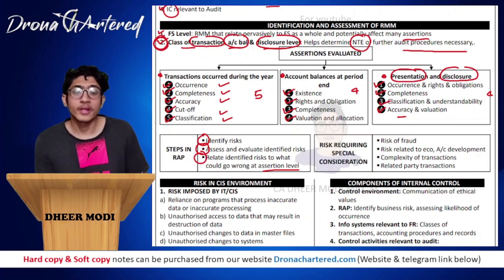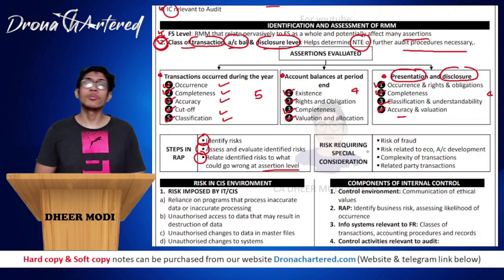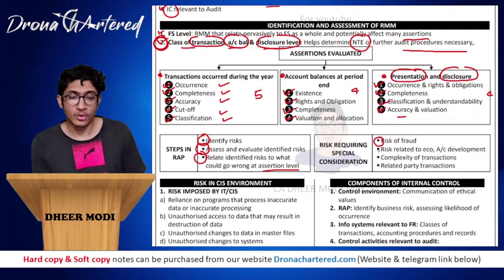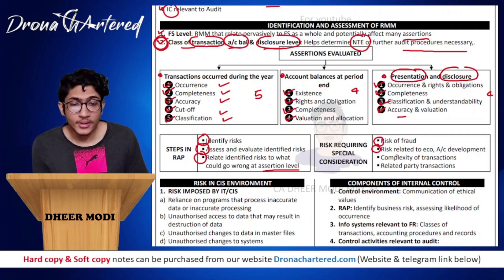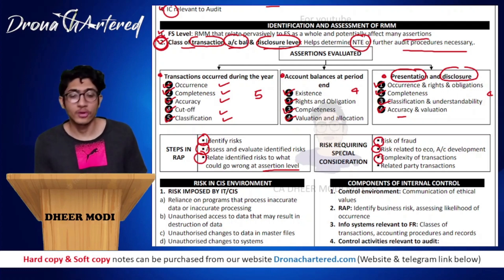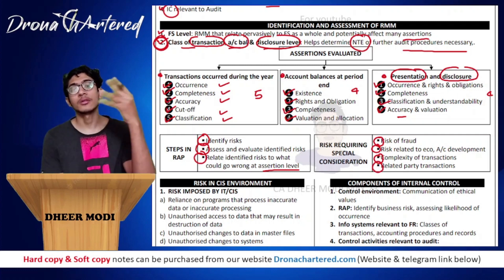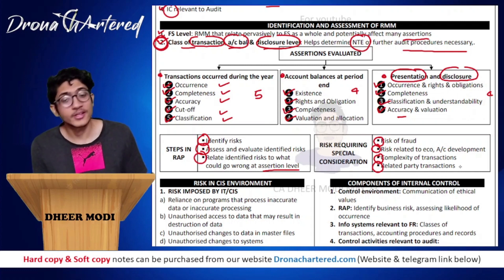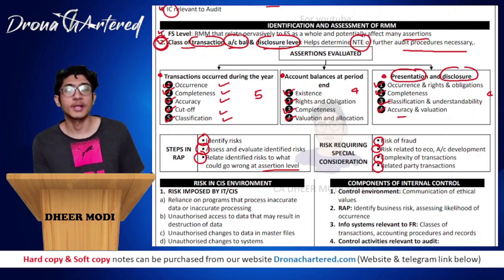There are certain risks requiring special consideration where you might have to put more effort. These are: any risk relating to fraud; risk related to economic and accounting developments; complexity of transaction - the greater the complexity, the more possibilities of risk; and related party transactions because there is scope for risk of material misstatement to be present in related party transactions.